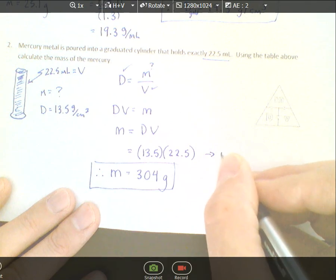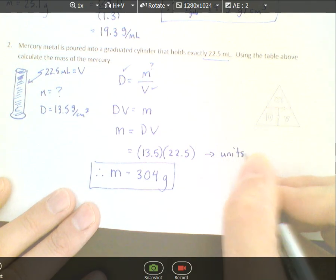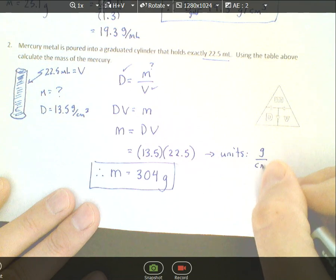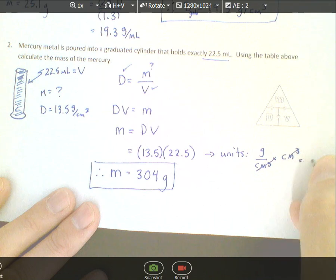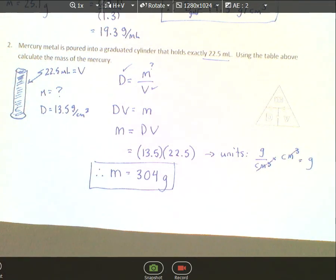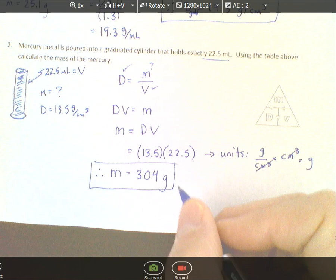Why does that work? The density was grams per cubic centimeter and the volume was milliliters, but milliliters is the same as cubic centimeters. So you have centimeters cubed over centimeters cubed and you're left with grams. Whenever you do density times volume, you end up with the units of mass.